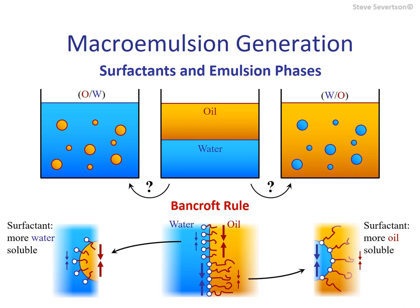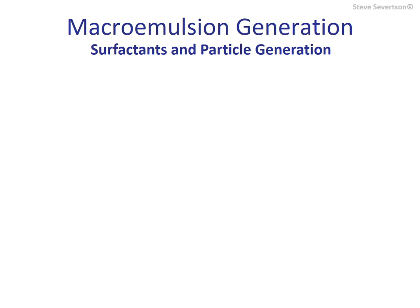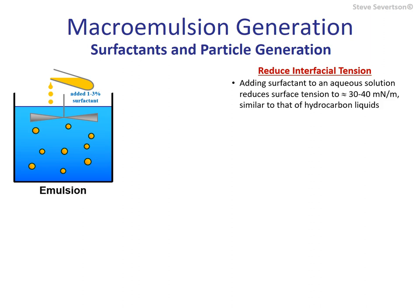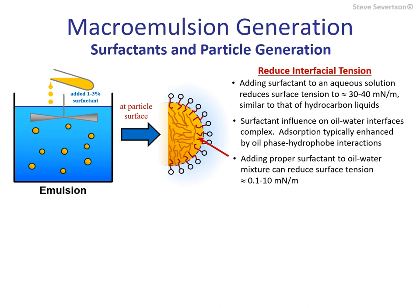Generating a macro emulsion requires the addition of about 1–3% emulsifier based on the amount of the dispersed phase. Emulsifying agents help during the generation of emulsions by reducing the interfacial tension between oil and water. Although polymeric materials and fine particles are identified as potential emulsifiers, for purposes of breaking a liquid down into small particles, monomeric surfactants are the most effective additive, primarily due to their ability to reduce interfacial tension and their small size, which allows them to diffuse rapidly to newly formed interfaces. Surfactants reduce the surface tension of water to below about 40 mN/m, and the addition of surfactant to an oil-water interface can reduce the interfacial tension to levels as low as 0.1 to 10 mN/m.